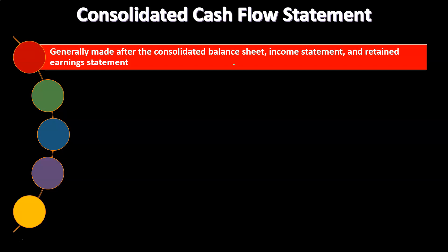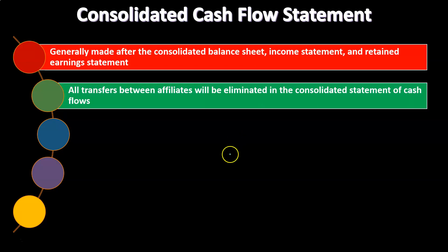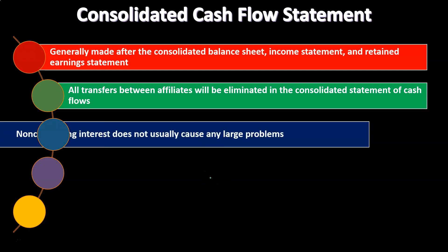Once those statements have been constructed, the Statement of Cash Flows becomes easier — more like a normal construction process — because we're making it from what has already been consolidated into a consolidated balance sheet, income statement, and retained earnings statement. All transfers between affiliates will be eliminated in the consolidated statement of cash flows. A lot of that elimination process will hopefully be done within the consolidation worksheet for the balance sheet and income statement. Therefore, as we take those consolidated numbers, it should be a more straightforward process for the Statement of Cash Flows.